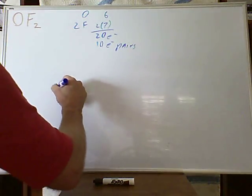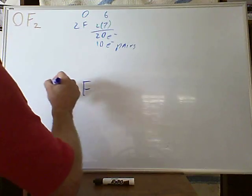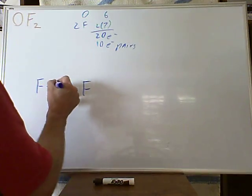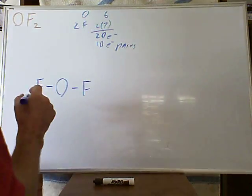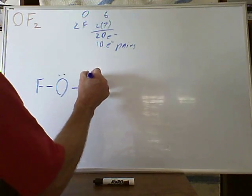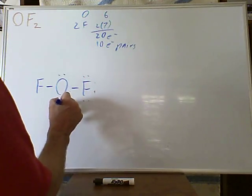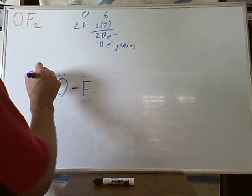We are going to put oxygen as the central atom, the fluorine is attached directly to the oxygen. Put in the bonding pairs, that gives us 8 more pairs: 1, 2, 3, 4, 5, 6, 7, 8.